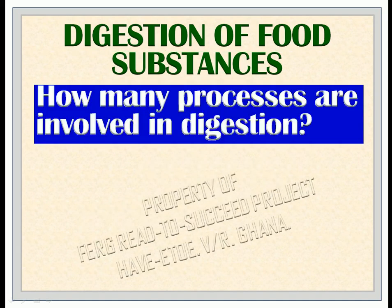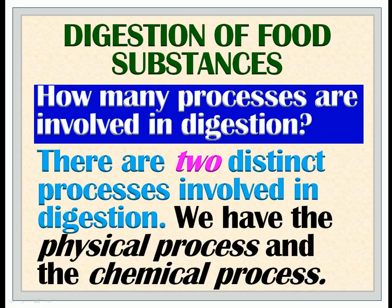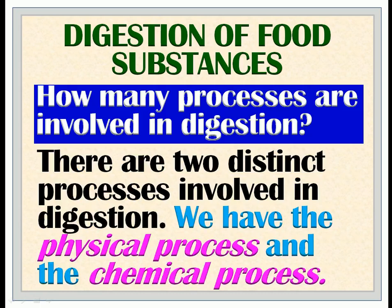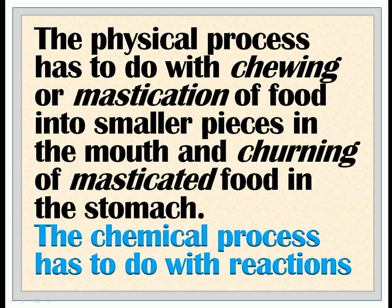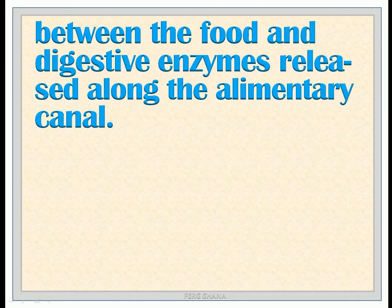How many processes are involved in digestion? There are two distinct processes involved in digestion: the physical process and the chemical process. The physical process involves chewing or mastication of food into smaller pieces in the mouth, and churning of masticated food in the stomach. The chemical process involves reactions between the food and digestive enzymes released along the alimentary canal.